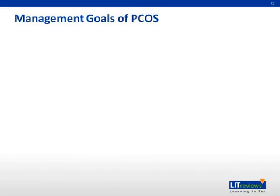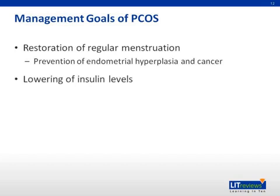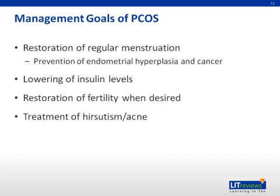Although there is no cure for PCOS, there are a few very important goals for treatment. The first goal is to prevent endometrial cancer. Next, the clinician should try to lower insulin levels and either diagnose or prevent diabetes. It is also important to give patients a chance for fertility restoration when they are ready to start a family, since infertility is very common among PCOS patients. Lastly, treatment of hirsutism and acne is often one of the most frequent complaints that brings patients to the clinic, so it's important to address this.